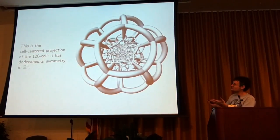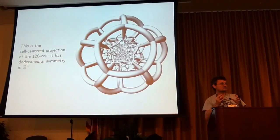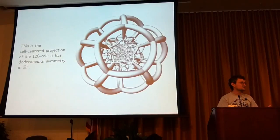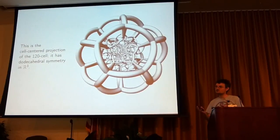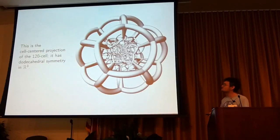So this picture here is the cell center projection of the 120-cell. The north pole is in the middle of one of the dodecahedral cells, and you go through this process, and this is what you get, and it has dodecahedral symmetry when you've finished doing everything. So you've lost a lot of symmetry. The 120-cell has 120 dodecahedra, and all of them are the same, but here we lost most of that symmetry, but we still have retained dodecahedral symmetry in the image.